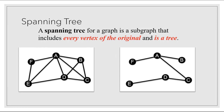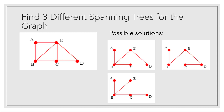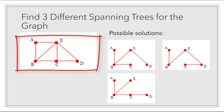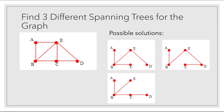We observed in other videos that the number of vertices in a tree minus one is going to be equal to the number of edges. Notice that in the graph on the right, we have six vertices and five edges, so it fits that characteristic as well. In a previous video, we also looked at finding three different spanning trees for a given graph. On the left is the original graph with five vertices, and on the right are some of the possible spanning trees — they each have five vertices, four edges, and no circuits.